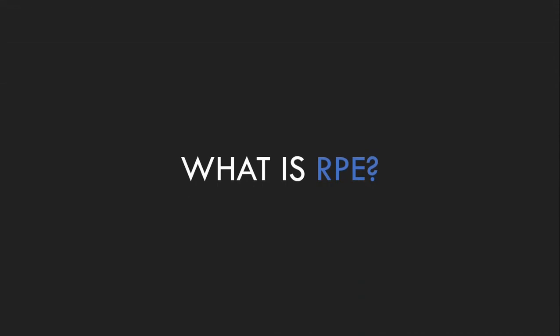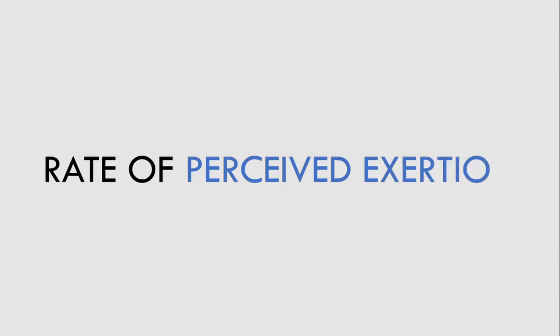First we need to establish what RPE means. RPE is an acronym for Rate of Perceived Exertion. Essentially, RPE is a subjective measure of how difficult an exercise was. A trainee rates the exercise they just performed on a scale from 1 to 10, with 1 being the easiest and 10 being the most difficult. This scale can be used for a wide variety of exercises including team sports, endurance training, and resistance training.